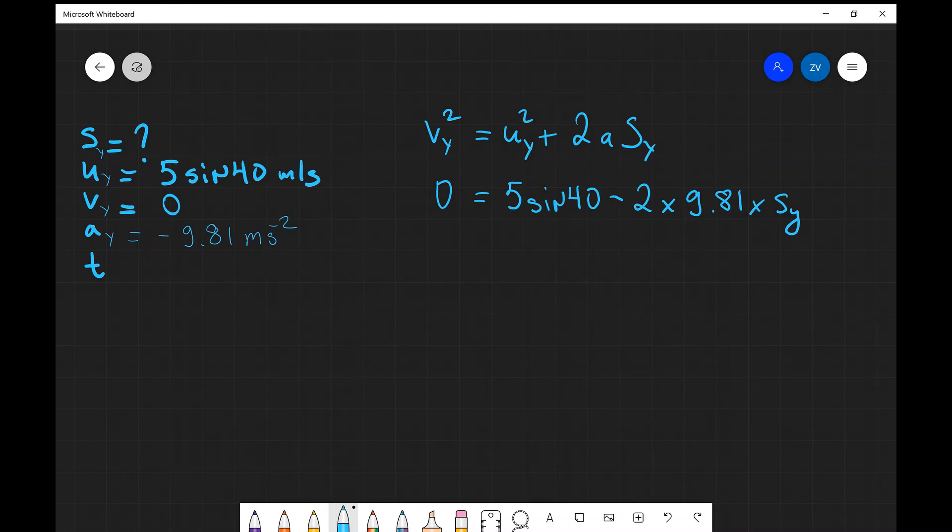So all I need to do now is essentially just rearrange for S_y in order to find the correct answer. So let's do that. I'm going to bring minus 2 times 9.81 times S_y onto the other side, so that's going to turn into a plus, so it's going to be 2 times 9.81 multiplied by S_y, that's going to equal 5 sin 40.